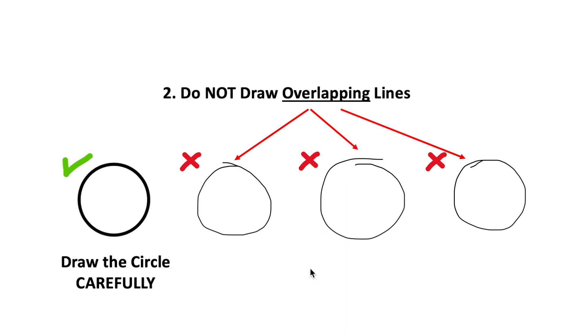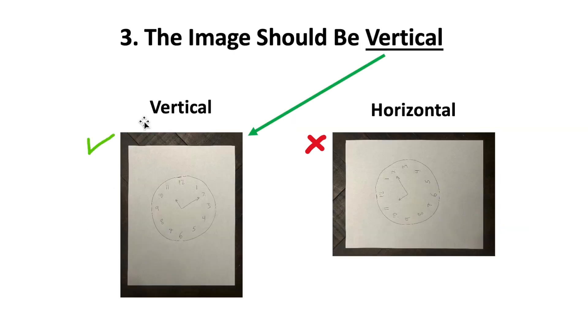The next common mistake is to draw overlapping lines. These overlapping lines will cause your circle to look very odd to our software. Therefore, draw your circle carefully. Mistake number three is forgetting to make sure that the image is vertical before you submit it to the app. Horizontal images will lead to incorrect results.